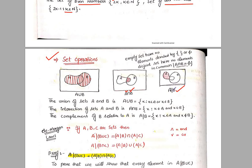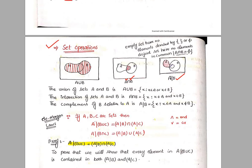Next is A complement B. We denote complement with this symbol. In this complement, the elements are those that belong to set A but do not belong to set B.